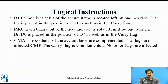RLC: Each binary bit of the accumulator is rotated left by one position; bit D7 is placed in the position of D0 as well as in the carry flag. RRC: Each binary bit of the accumulator is rotated right by one position; bit D0 is placed in the position of D7 as well as in the carry flag. The difference between RLC and RRC is rotating the bit either right or left. CMA: The contents of the accumulator are complemented; no flags are affected. CMC: The carry flag is complemented; no other flags are affected.